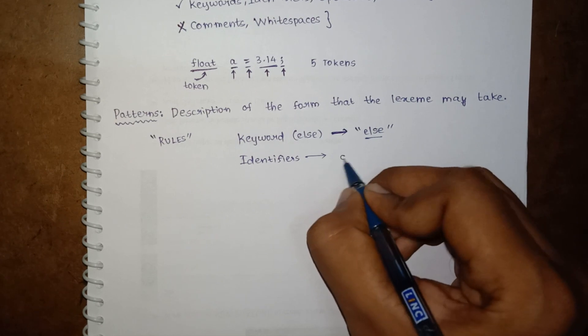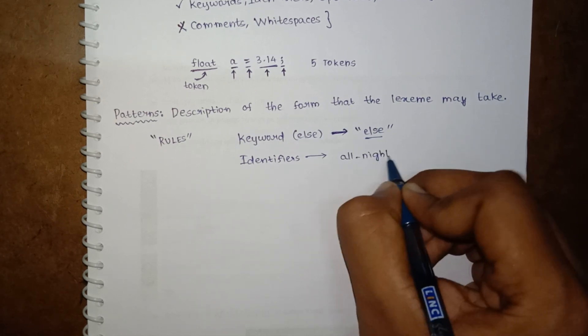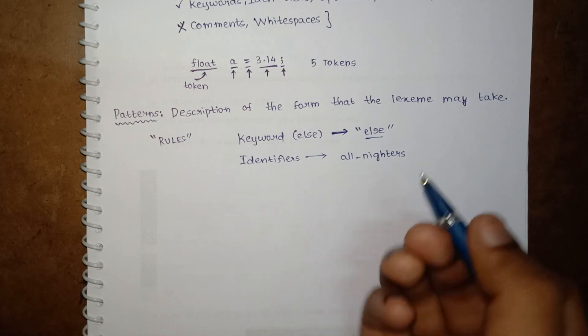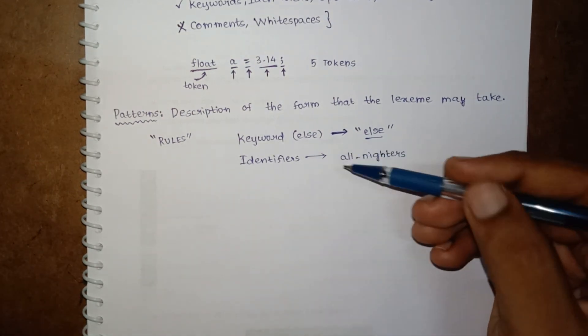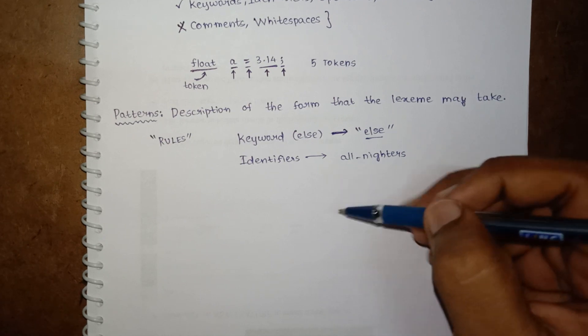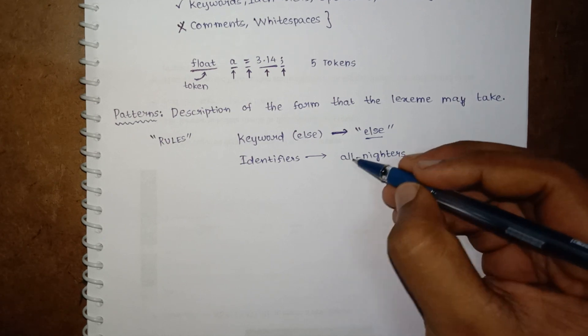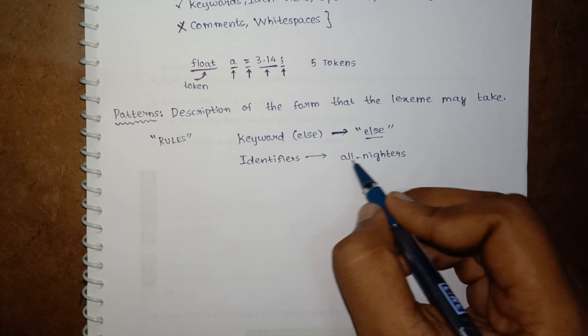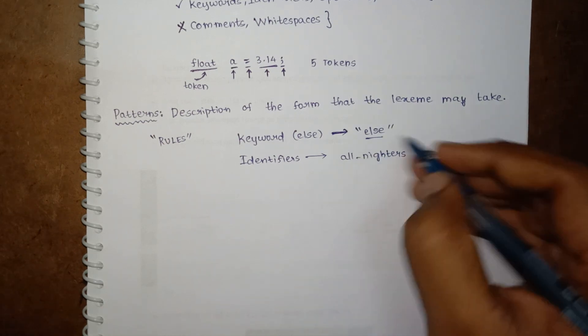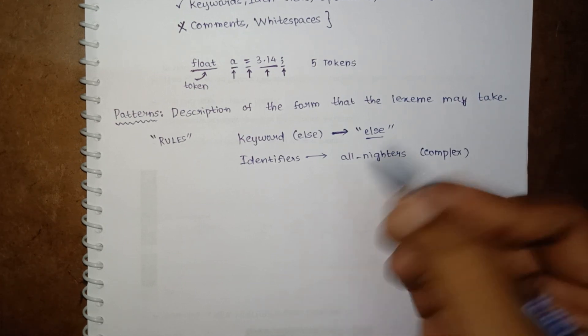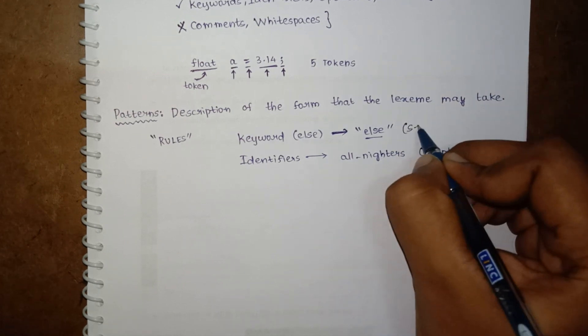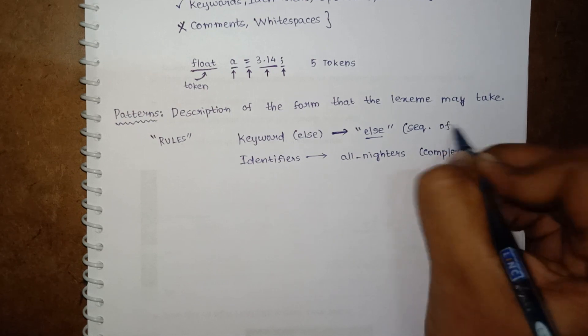Now consider an identifier, for suppose 'allnighters'. For something to be an identifier, it should follow certain rules such as it should start with a letter or an underscore, it should only contain letters, underscore, and digits. There are some certain rules, so the pattern may be complex in this case, whereas in the above case it is just simply a sequence of characters.